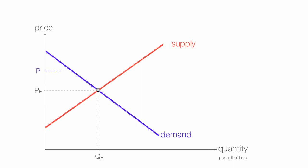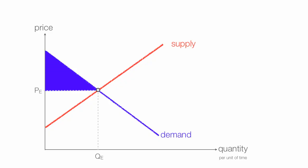There are consumers willing to pay a higher price than the equilibrium price, and some consumers are willing to pay a much higher price than the market price. They don't have to because they can pay the equilibrium price. These consumers benefit from a lower price, and the blue area is consumer surplus.